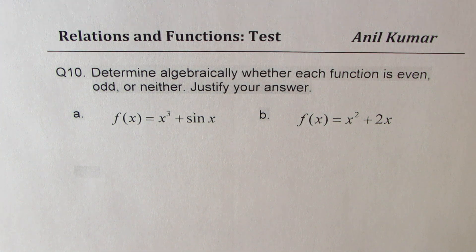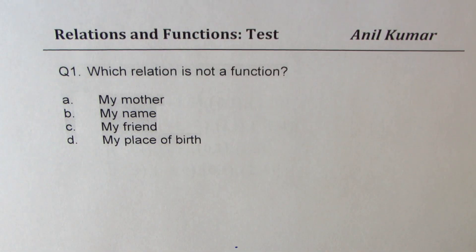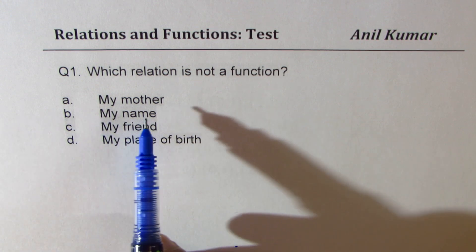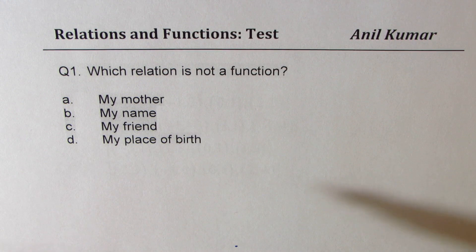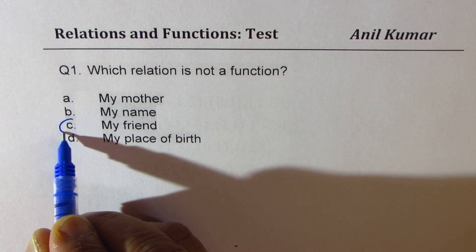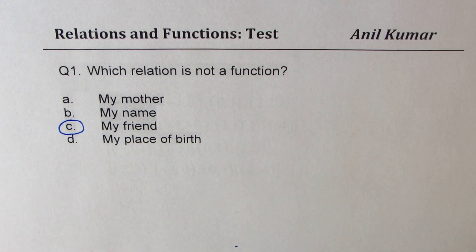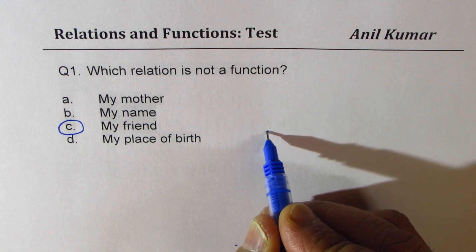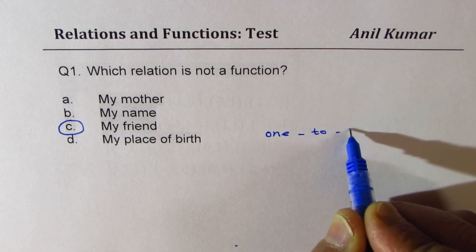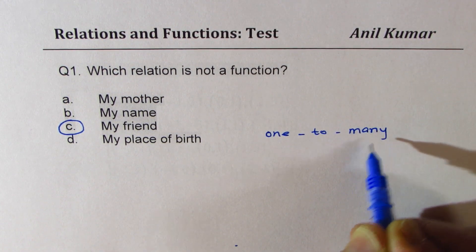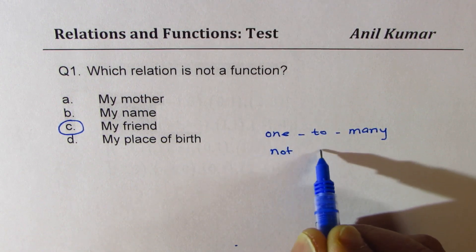Now let us answer these questions one by one. Question one: which relation is not a function? My mother — unique. Name is unique. My friend — you could have many friends, so this is not a function. It is one-to-many, not a function.